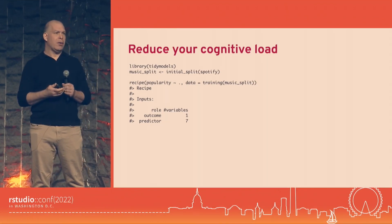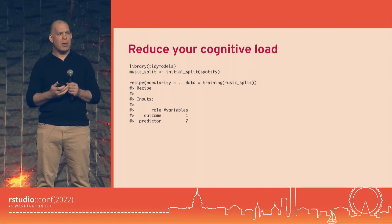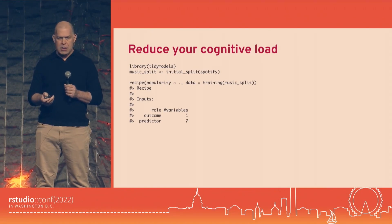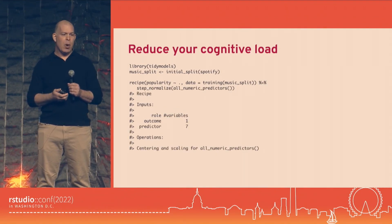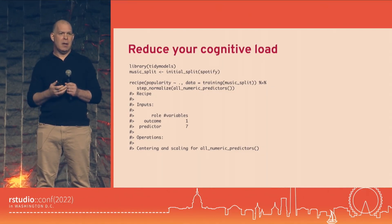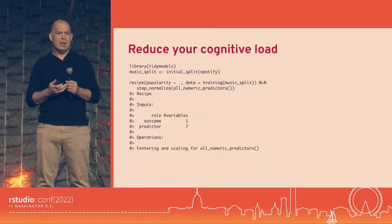Let's say we're going to use a neural network or nearest neighbor model where we have to make sure predictors are all in the same units. One common way is centering and scaling. The step function for that is called step_normalize(). After step_normalize, you can use any dplyr-style selectors — like contains() or starts_with() — or just list the variables unquoted, to say which variables should be affected.